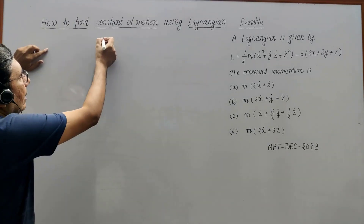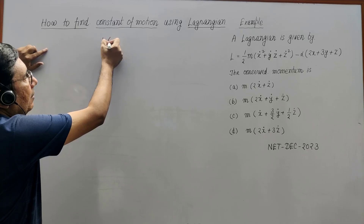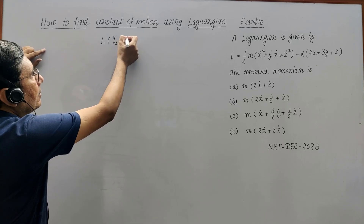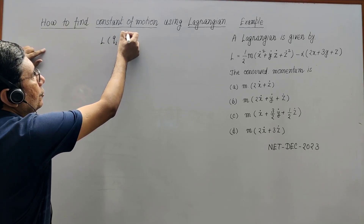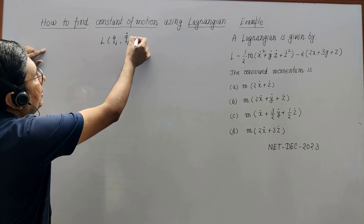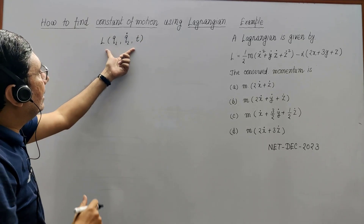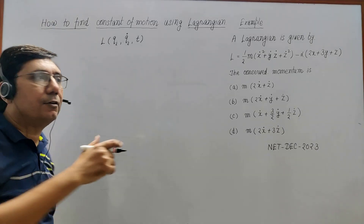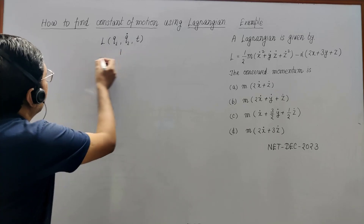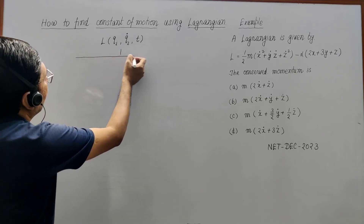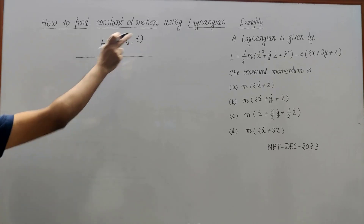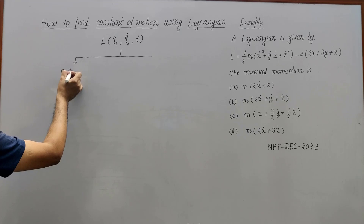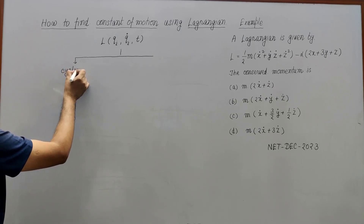A Lagrangian will be a function of generalized coordinates Qᵢ, it will be a function of generalized velocities Q̇ᵢ, and it may also be a function of time. If this Lagrangian is given, first what we are going to do is check for the cyclic coordinate. The first method to find out the constant of motion is to look for cyclic coordinates.